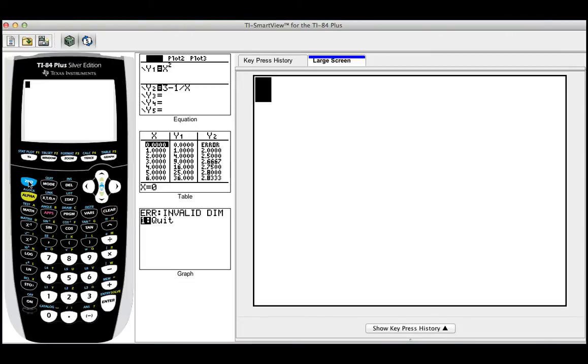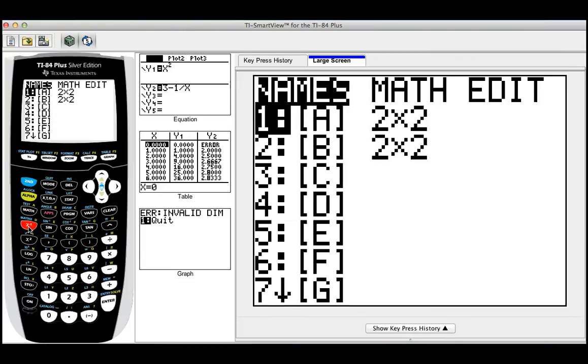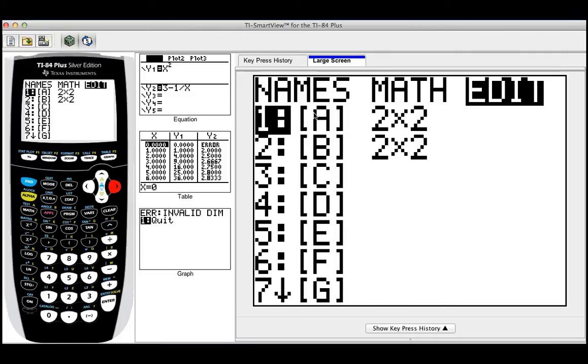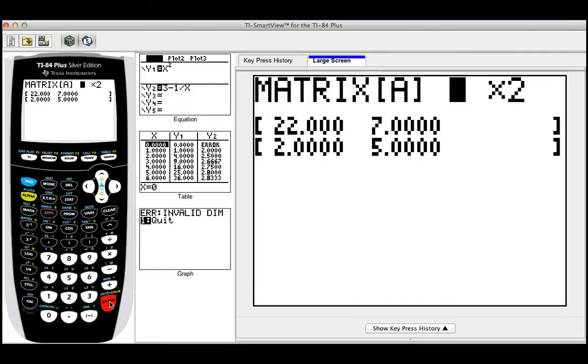Okay, so we have the calculator. The first step is to do second matrix because we're going to make a matrix in the calculator. Now you go to edit and look, we are on matrix A. Click enter.